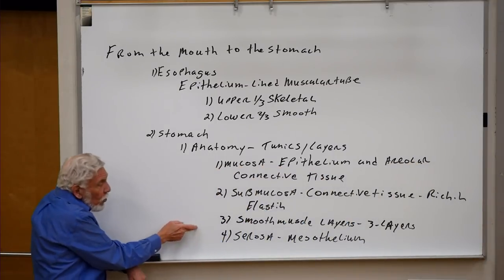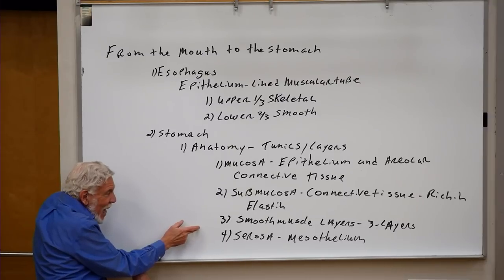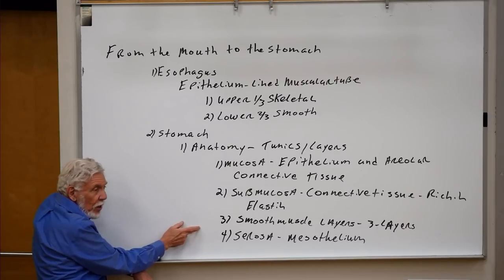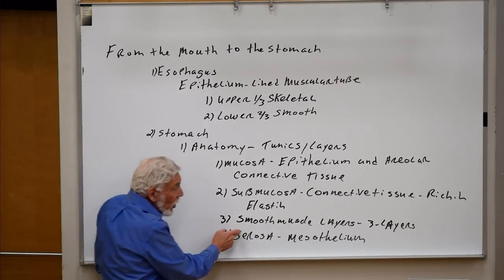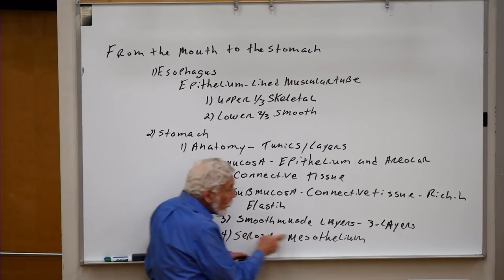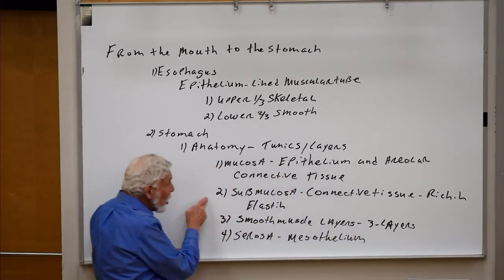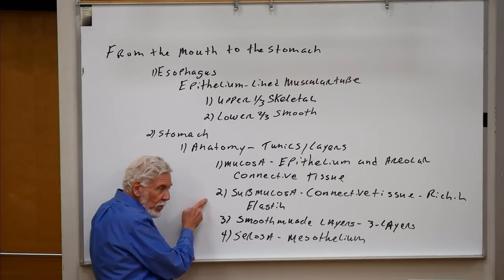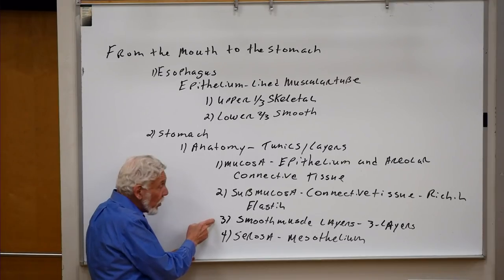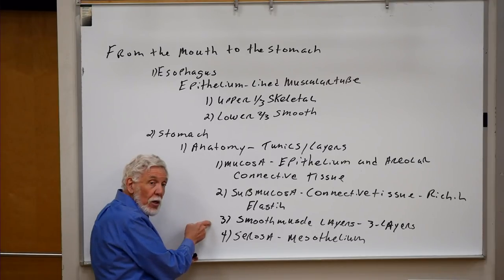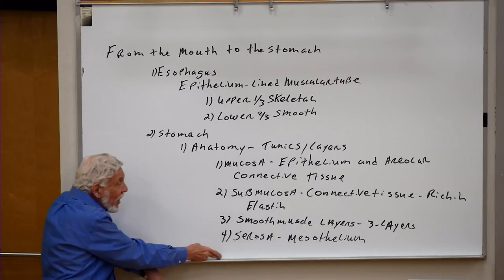One of the major things we're going to find in the stomach is that it's a churn. Motility is one of the major functions of the stomach, and that motility is governed by layers of smooth muscle. There are three layers of smooth muscle sitting just beyond the submucosa, and they can move the food inside the stomach back and forth — basically churning the stomach contents to increase the surface area of whatever we've eaten.